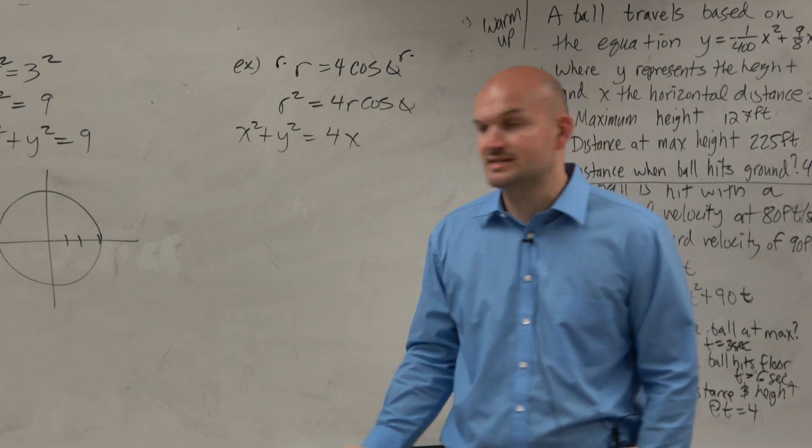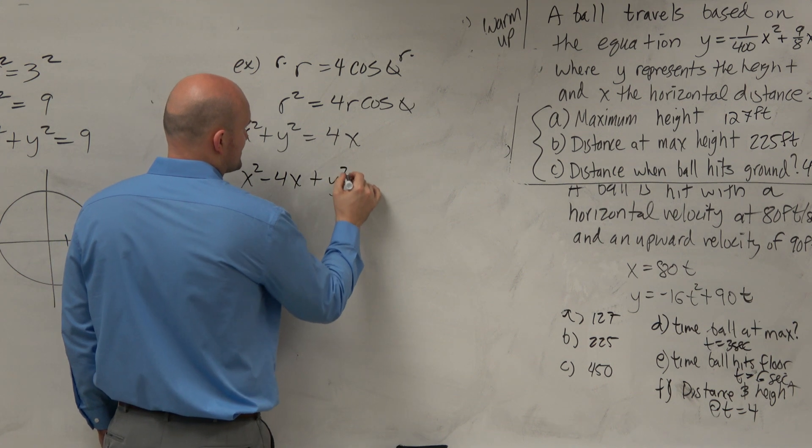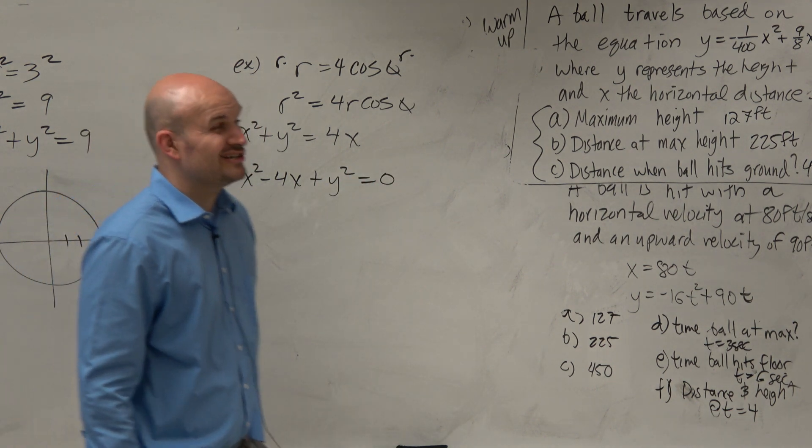So what do I do here? Well, let's get everything to the same side. x squared minus 4x plus y squared equals 0. Does anybody know what we can do here?